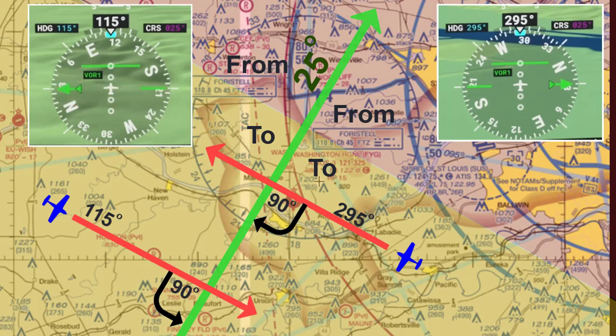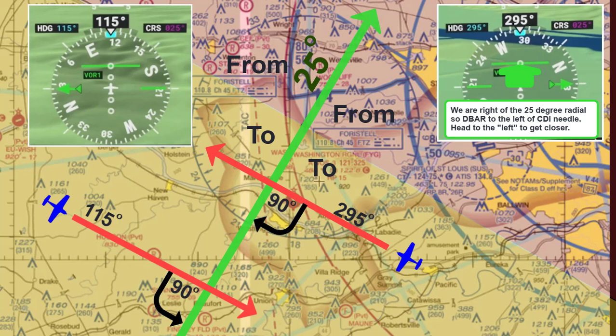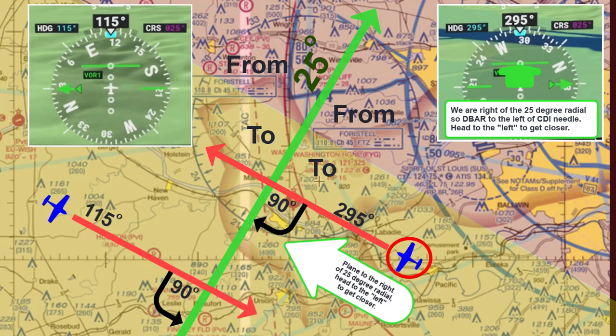Back to the flight from KSUS. You can see that as it relates to the 25-degree radial, the D-bar is offset to the left of the 25-degree course, so our aircraft is positioned on the right side of the 25-degree radial, or right of course. This means we have to navigate going left to get closer to the radial. The heading I chose is 295 degrees, or 90 degrees to the 25-degree course, to get there the quickest for this example.